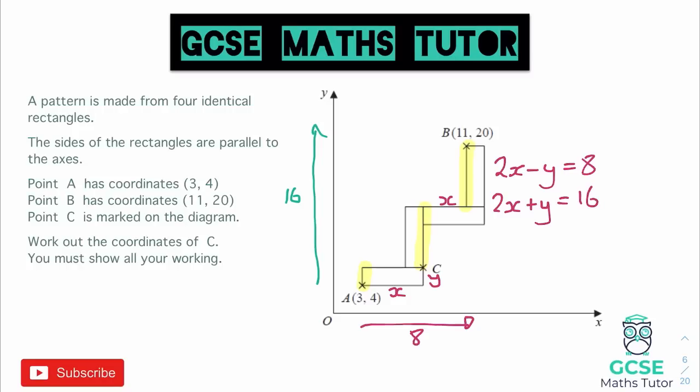So there we go. All we've done, we've just said in that first statement, to get from 3 to 11, we'd have to do 2X's and then take away a Y. In the second statement, to get from the 4 to the 20, we've done 2X's and a Y, and that has to equal 16. So what we actually have there is two simultaneous equations.